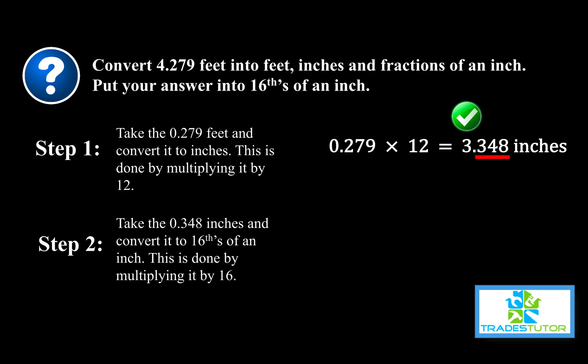That is how we convert it into 16ths. If we wanted to convert it into eighths, we would multiply it by eight. If we wanted to convert it into 32nds, we would multiply it by 32, and so on. So 0.348 times 16 is 5.57 sixteenths of an inch.